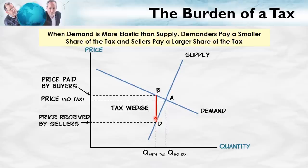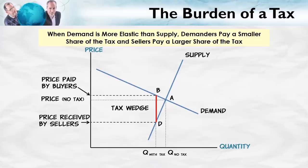And the suppliers pay a larger share. Therefore, we can just read off the diagram what happens when demand is more elastic than supply. You don't have to remember the rule or memorize it, because I'm going to give you some intuition in just a moment. You simply have to draw the diagram and be able to read the answer off the curves.